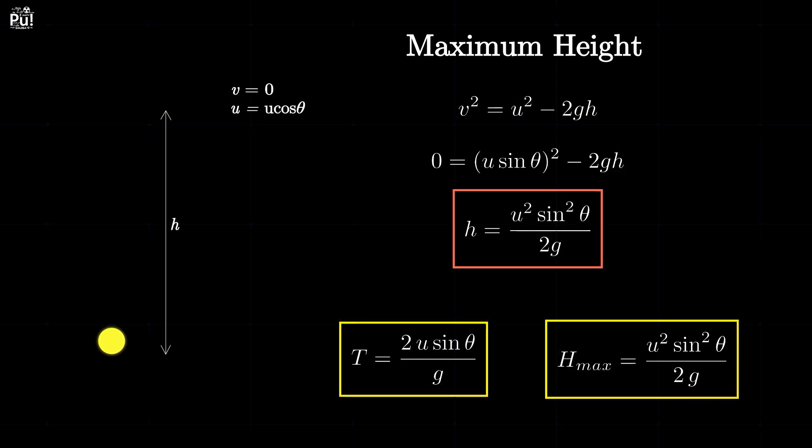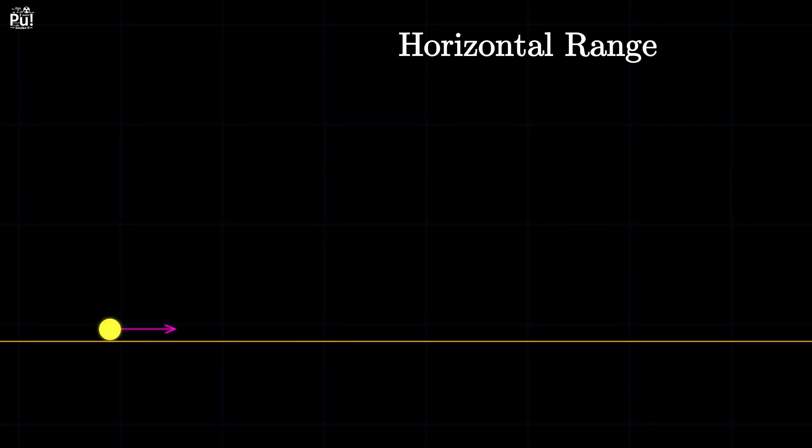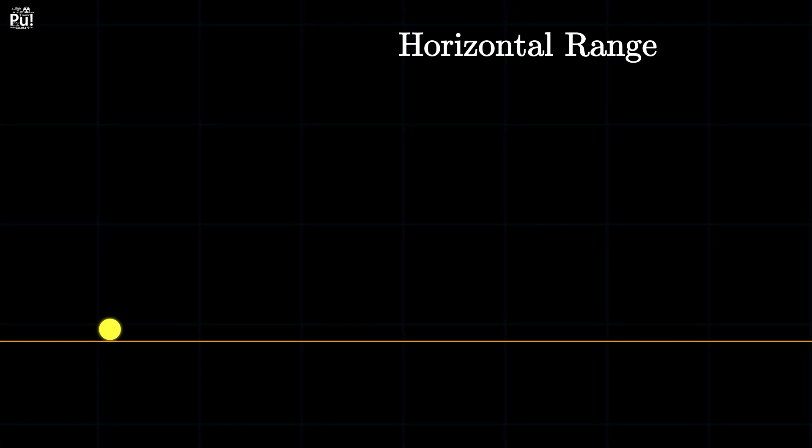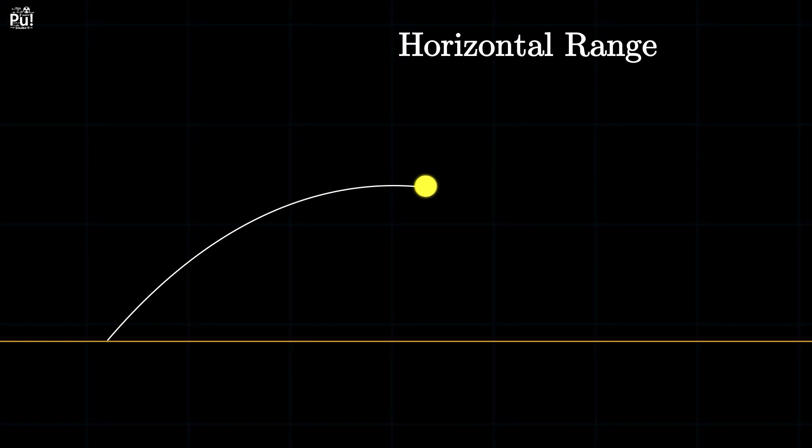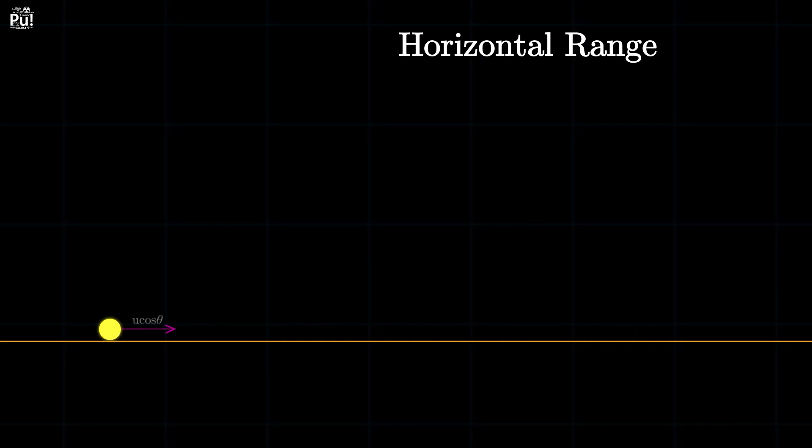Now let's look at the horizontal motion. Here things are simpler. There's no acceleration because gravity only acts vertically, so the ball keeps moving forward at a constant horizontal speed. That speed is u cosine theta, the horizontal component of the launch velocity.